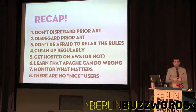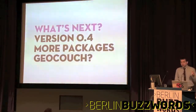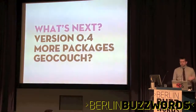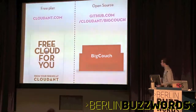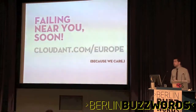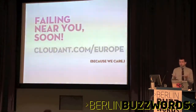Our users expect great things of us, and in turn that makes us great. Sometimes they're even nice to us, and that makes our day. We're going to have Big Couch 0.4 available soon with more packaged deployments, maybe GeoCouch integration later in the year — not in 0.4. You can try everything at cloudant.com, we have a free plan. Or you can get the source code for Big Couch, the distributed version of CouchDB, on GitHub — forks and patches welcome. Of special interest to Europe, we're going to have European clusters soon. Right now we have clusters in the US and Asia — so if you want us to fail you, we could do that pretty soon.